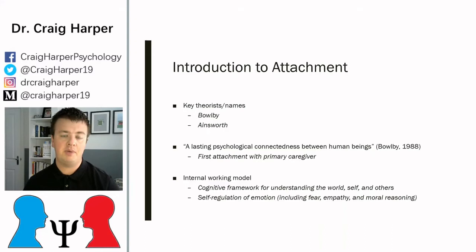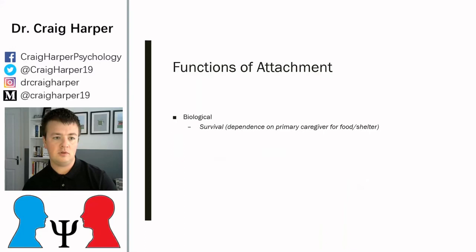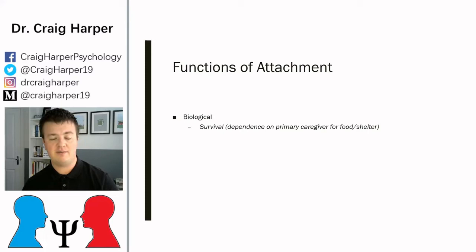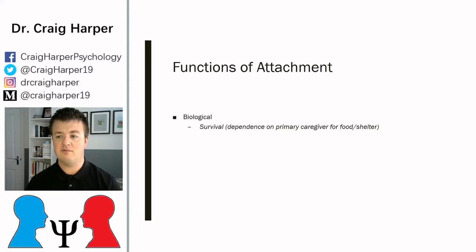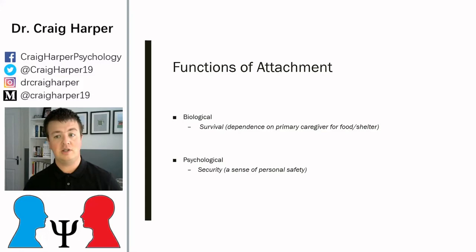The internal working model is really key to understanding how attachment theory applies to criminal behavior. There are two key functions of attachment. The first one is clearly biological — when a baby is very young, they obviously can't look after themselves or feed themselves, so biological attachment becomes a survival mechanism. As people get older and form different relationships, psychological attachment becomes more important and provides a sense of security and personal safety.